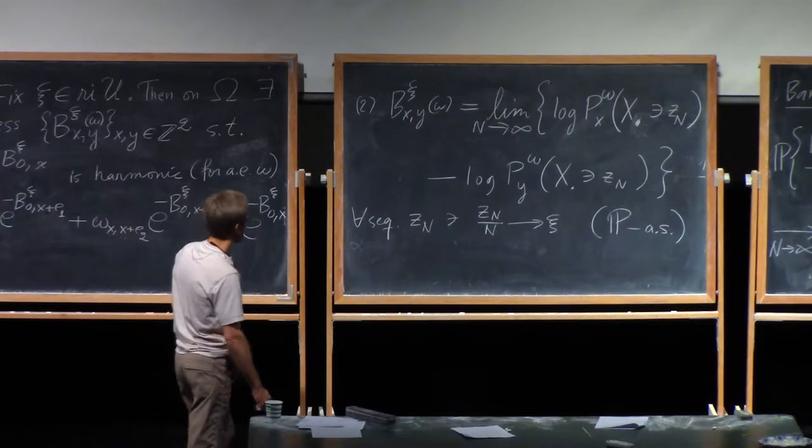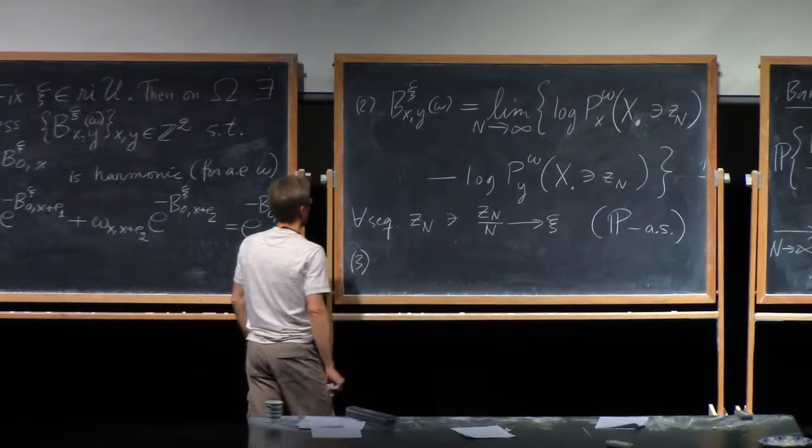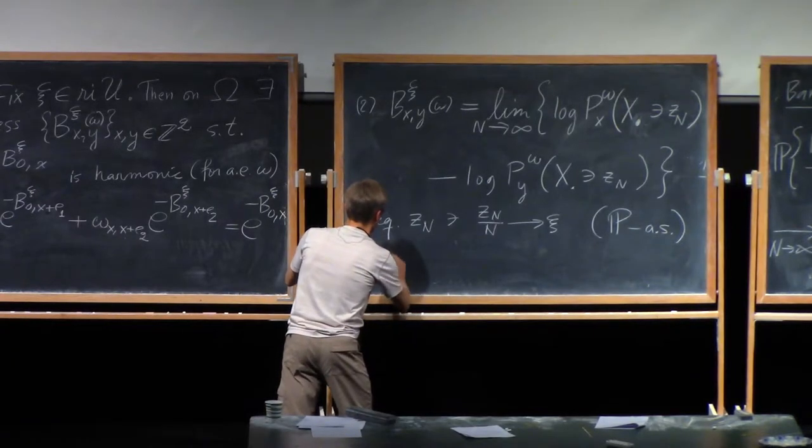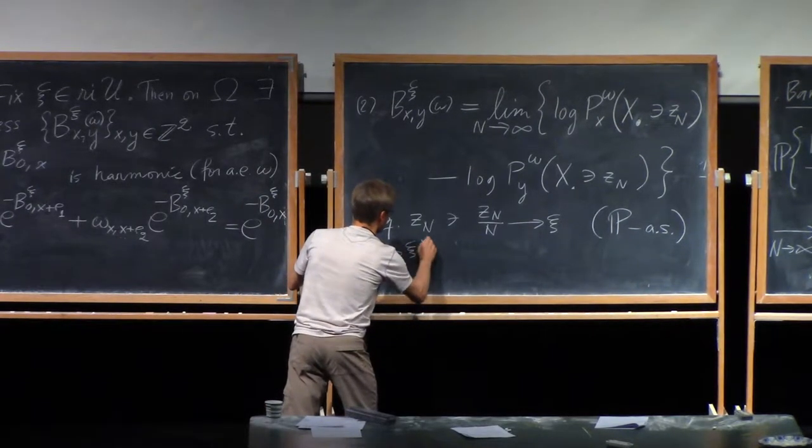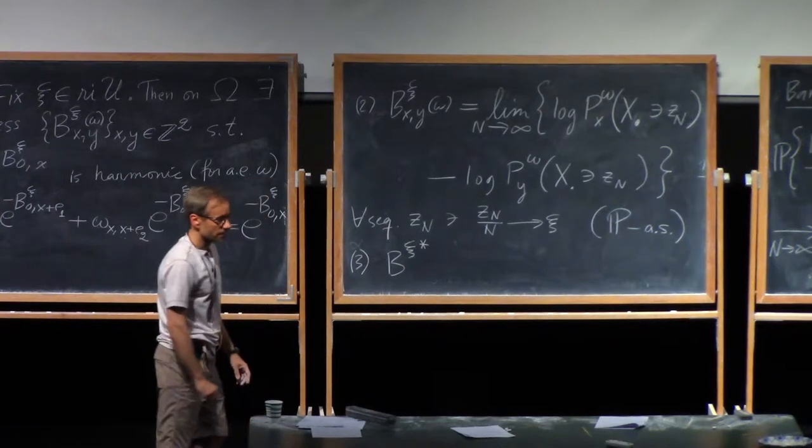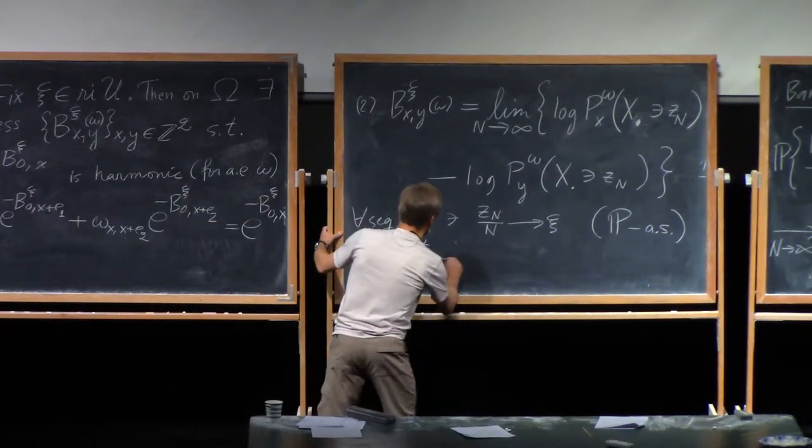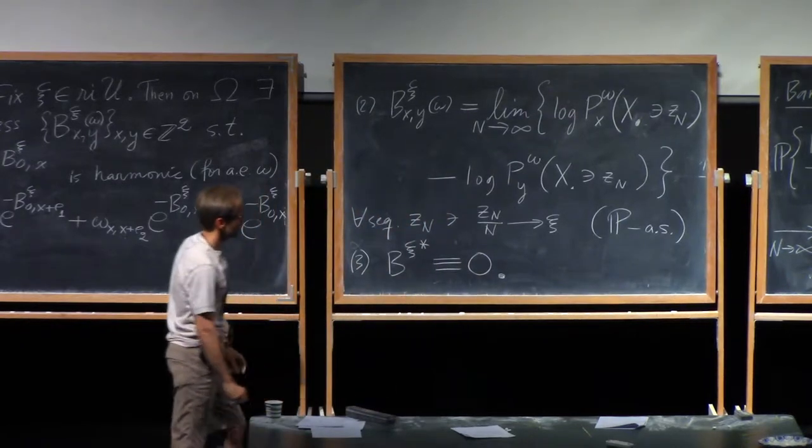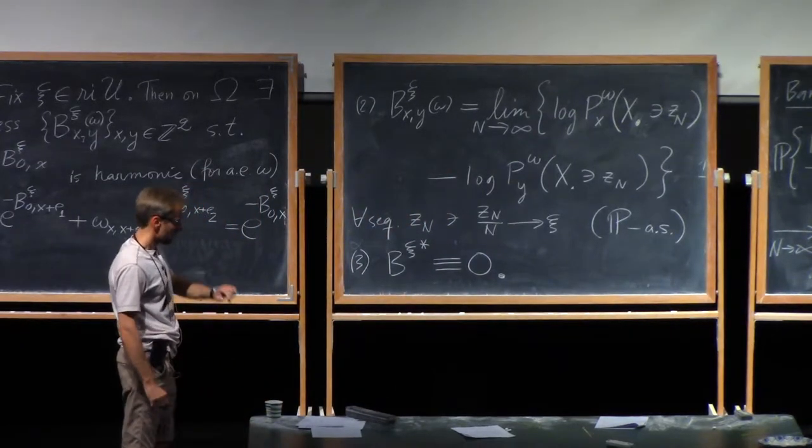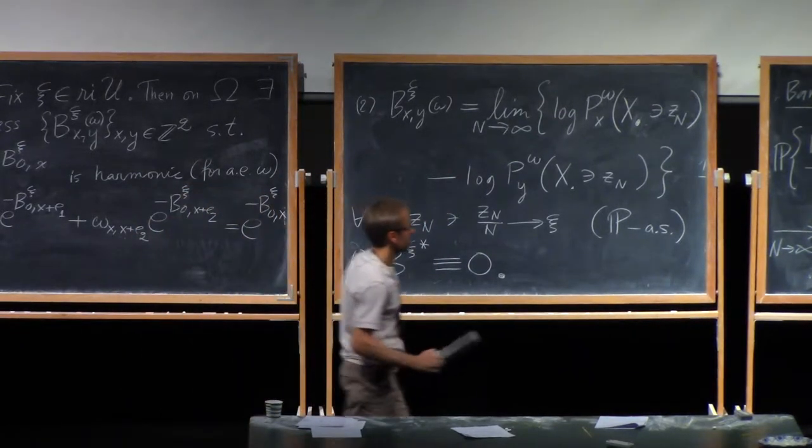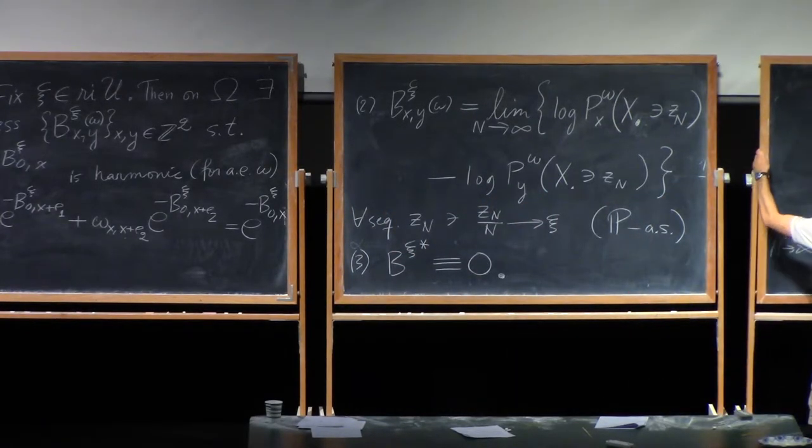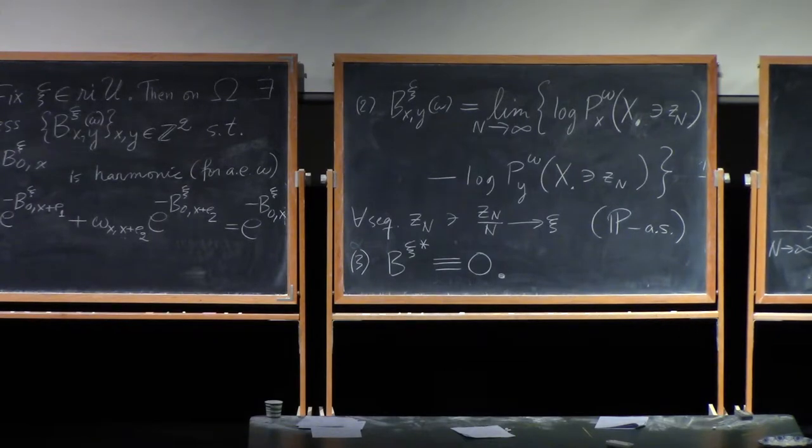So let me say it again in words precisely. There is a probability one set of environments omega such that no matter which sequence you pick that satisfies this limiting behavior, this convergence holds to that value there. Okay. And maybe a third property is that what if you pick xi equal to the law of large numbers velocity? Well then you just get identically zero. Okay. So that's the first part.